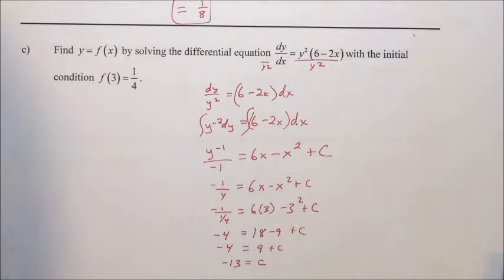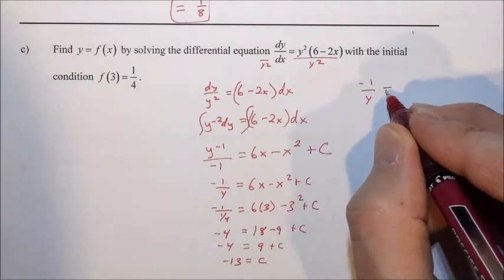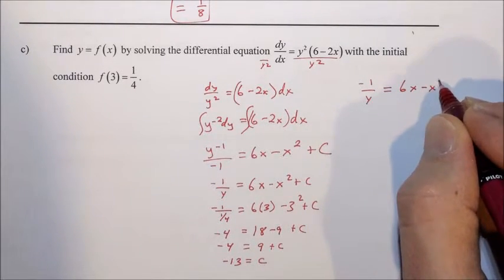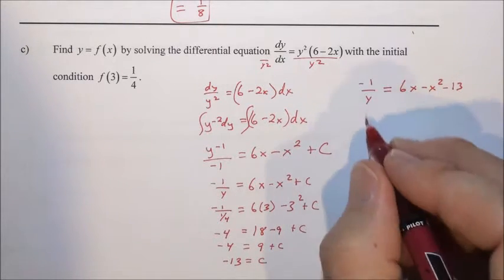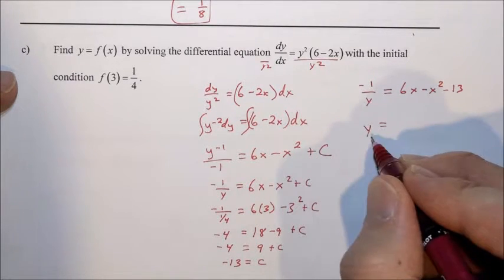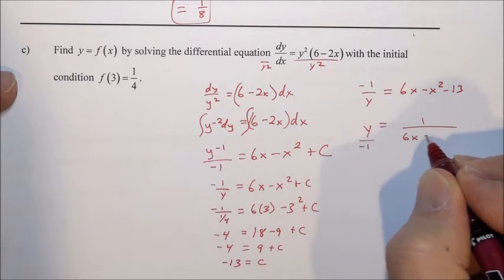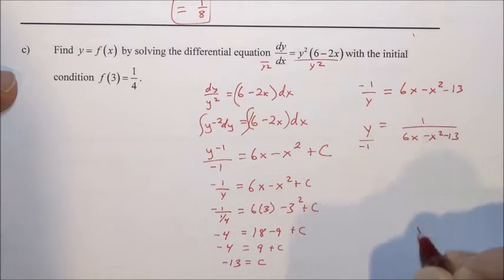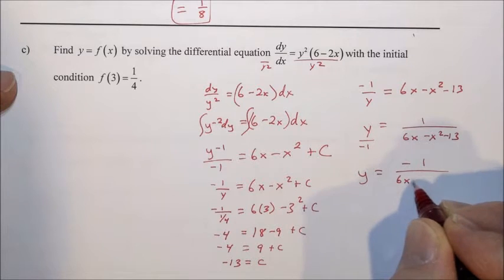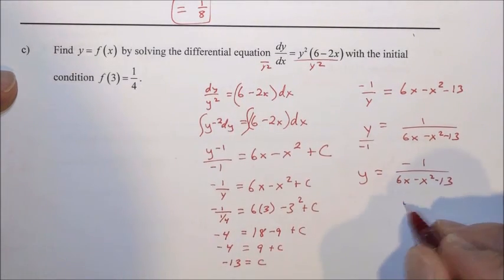So now we go back up here, and we have negative 1 over y is equal to 6x minus x squared minus 13. We want to reciprocate this, and we now have y over negative 1 is equal to 1 over 6x minus x squared minus 13. And then we just multiply by negative 1, so y is equal to negative 1 over 6x minus x squared minus 13. We're not asked to find the domain, so we are done.